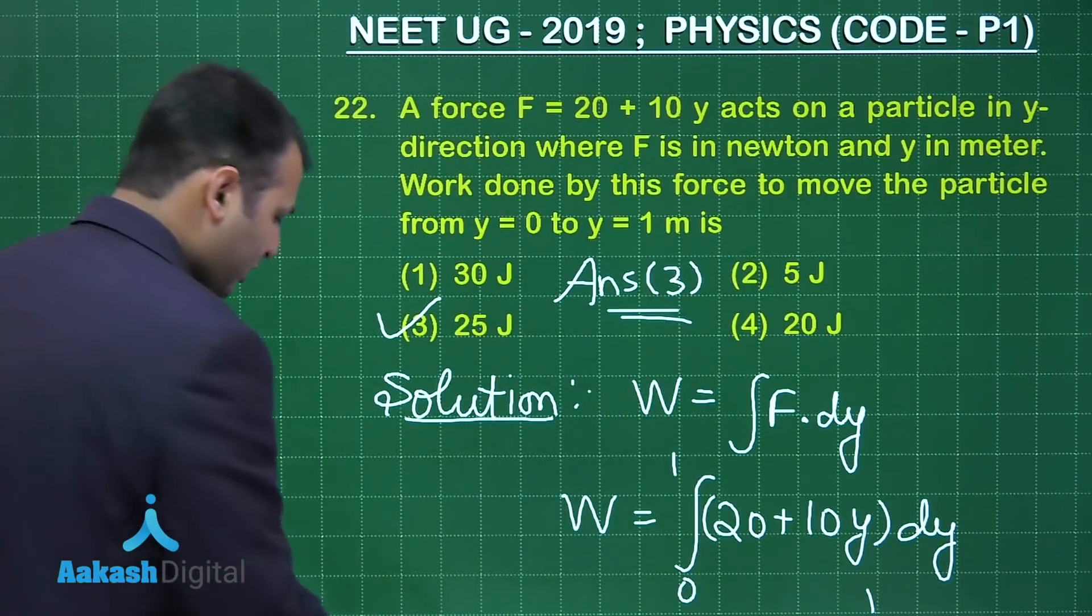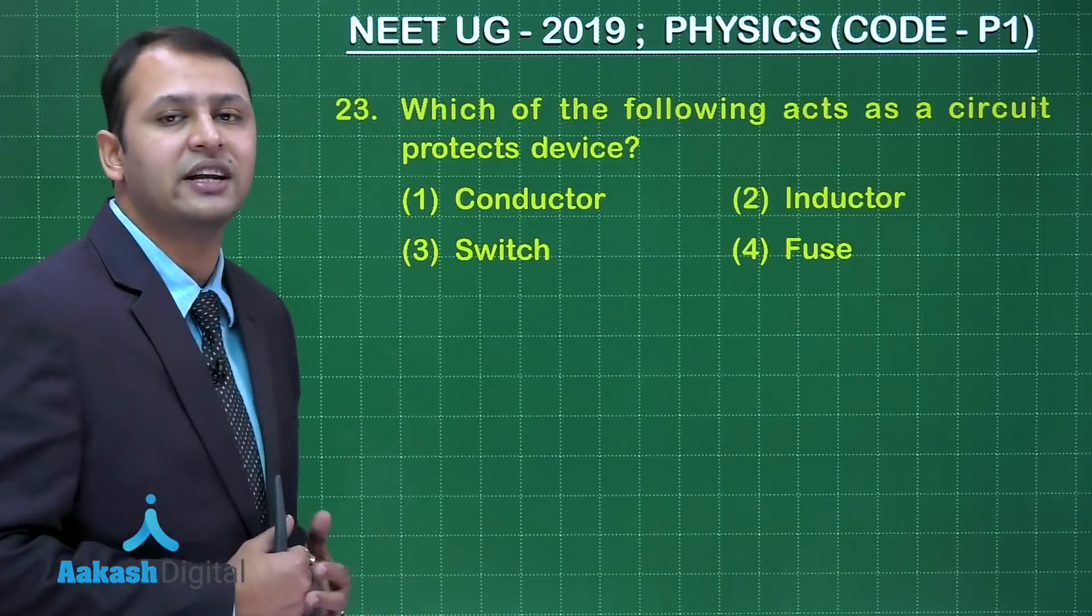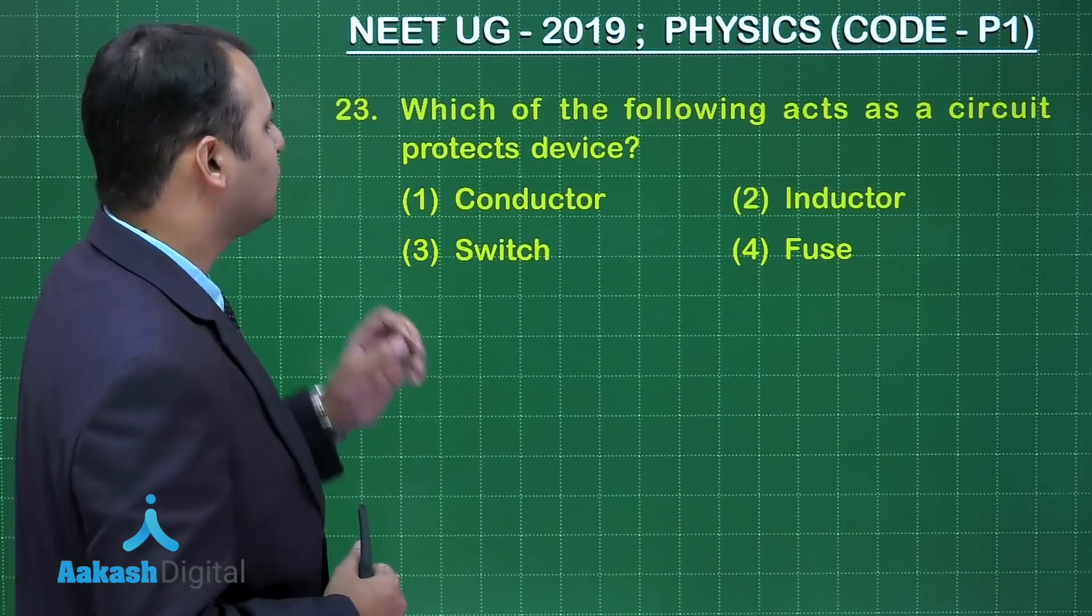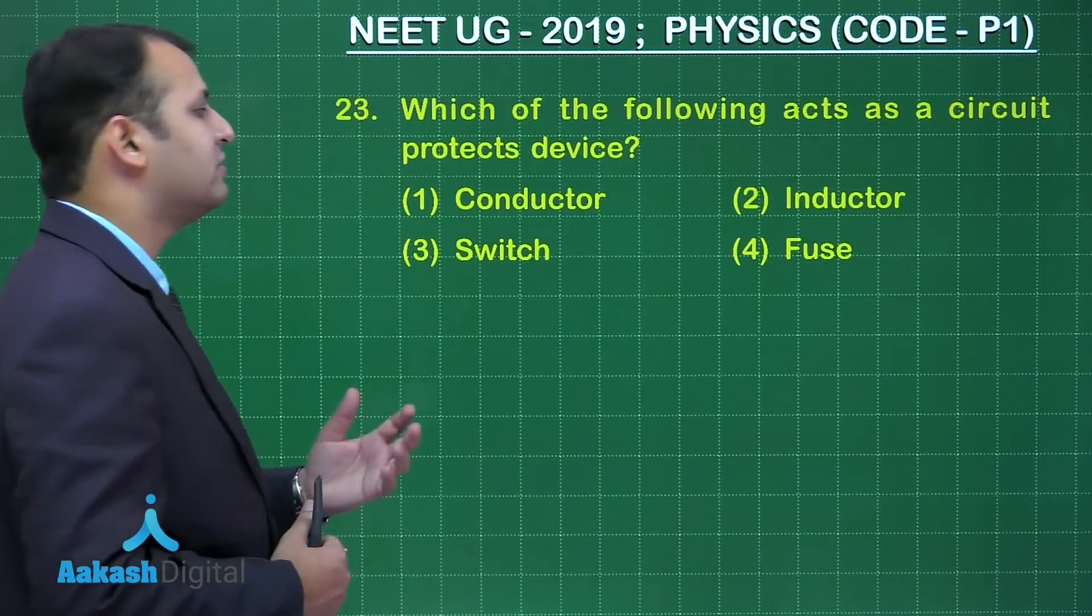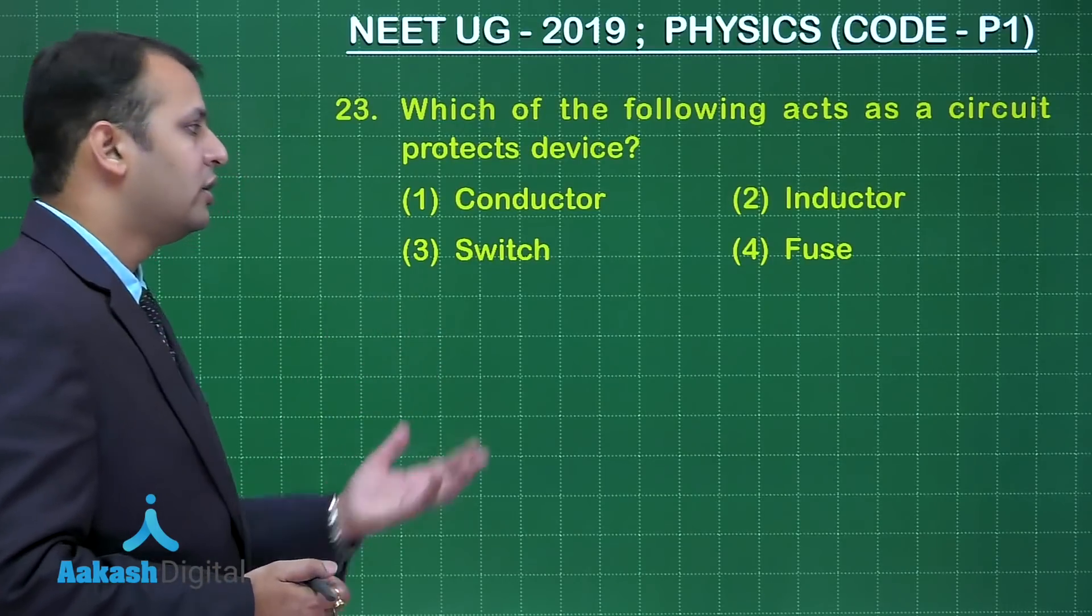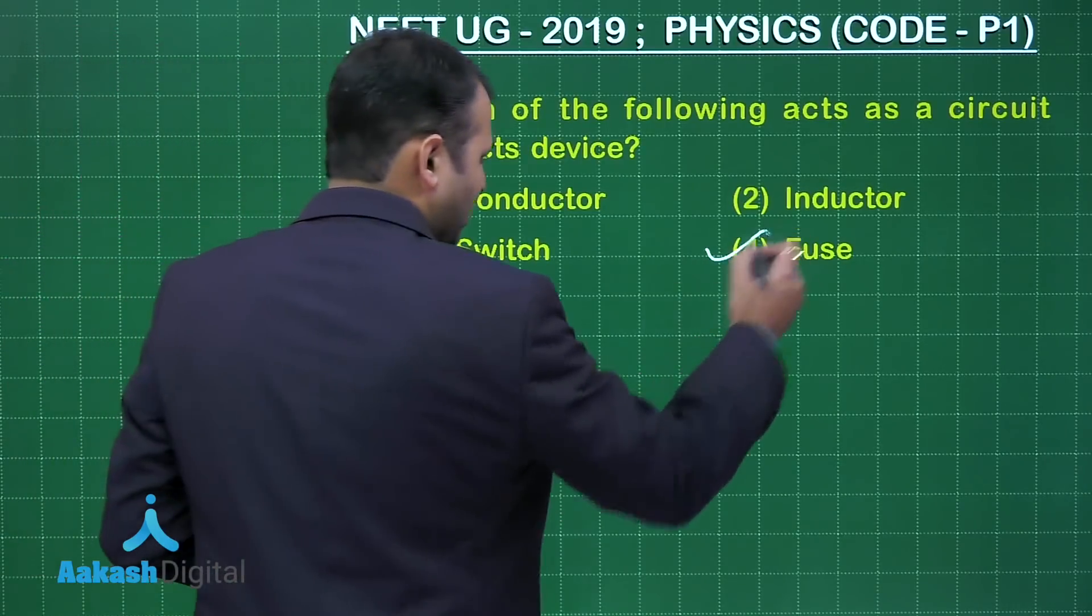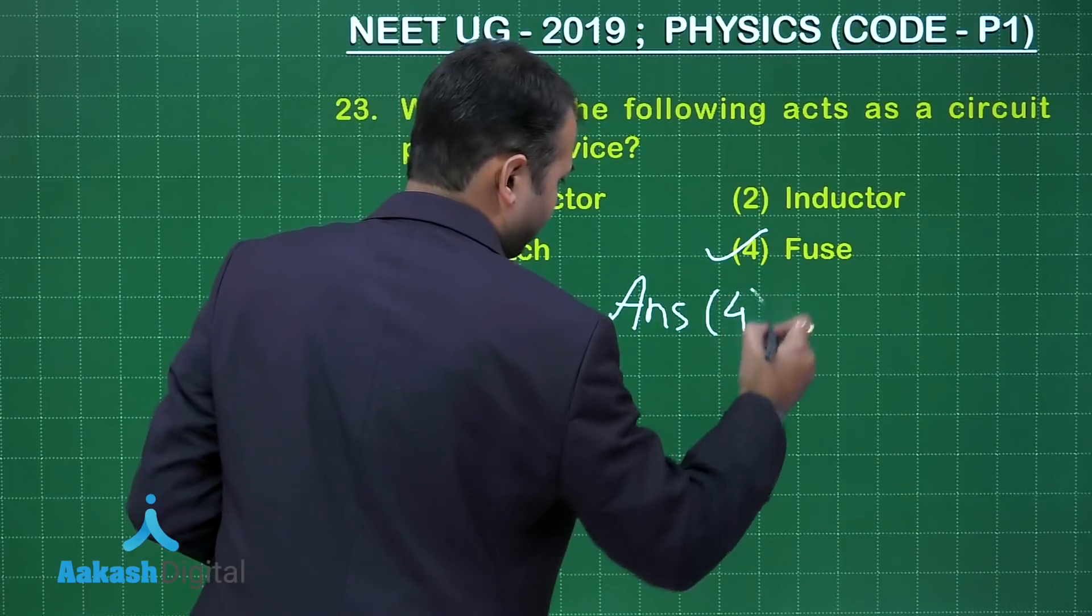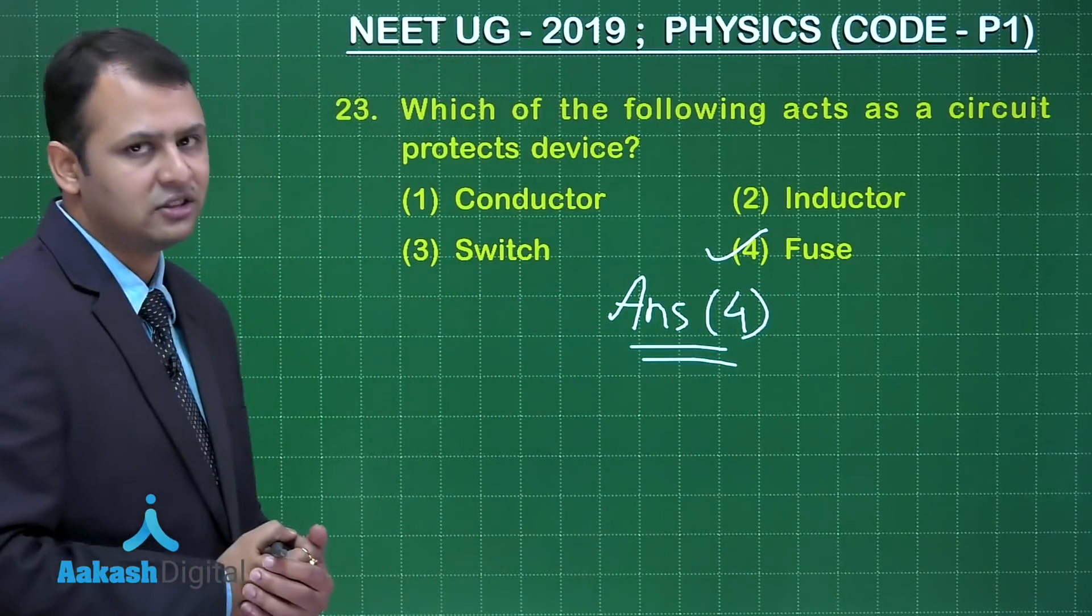Now let's move on to the next question. The question belongs to chapter current electricity. As per the question, which of the following acts as a circuit protect device? Among the four, fuse is the one which acts as a protector. So option number 4 would be the right answer here.